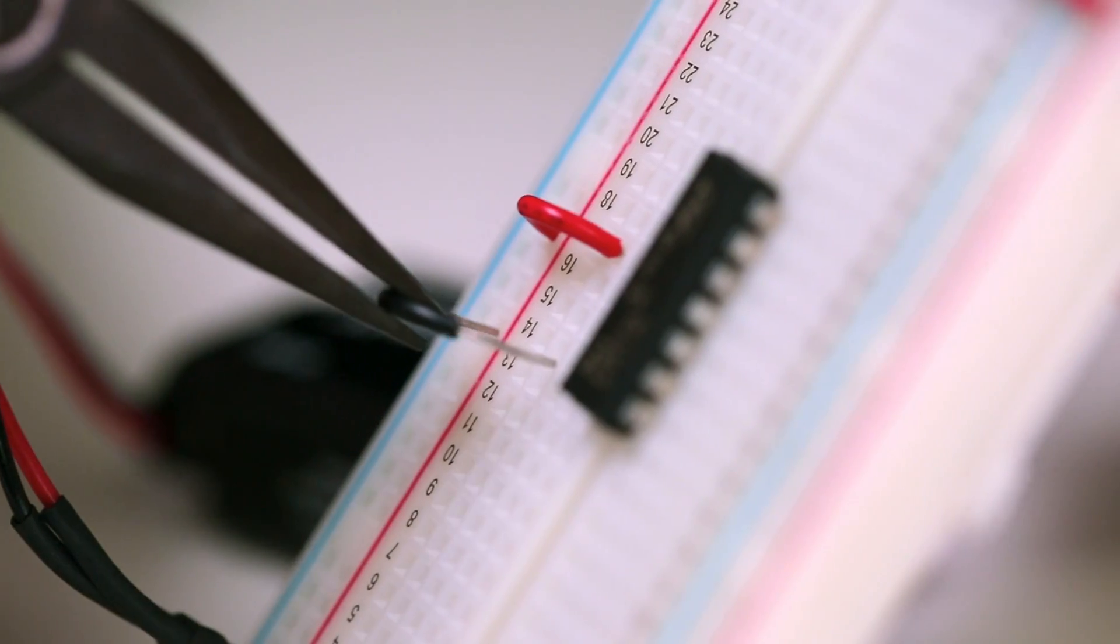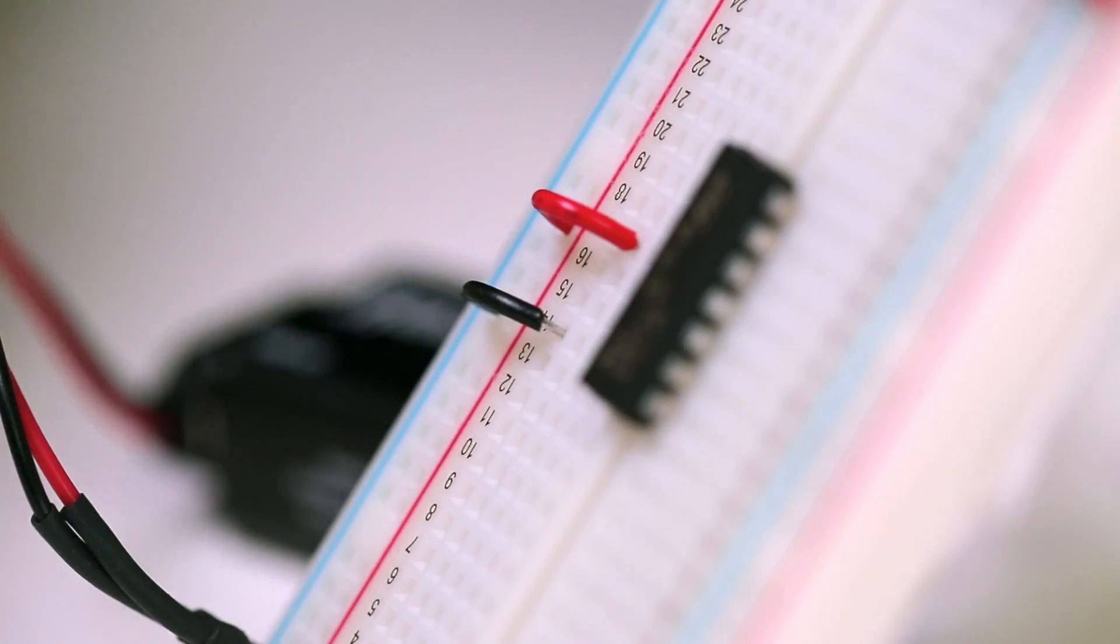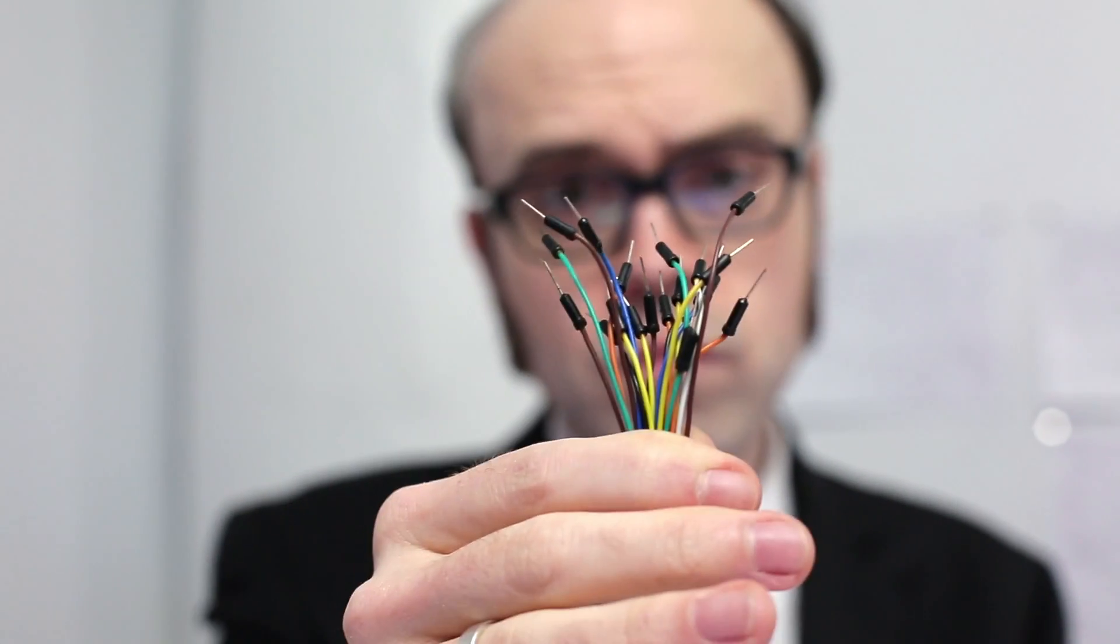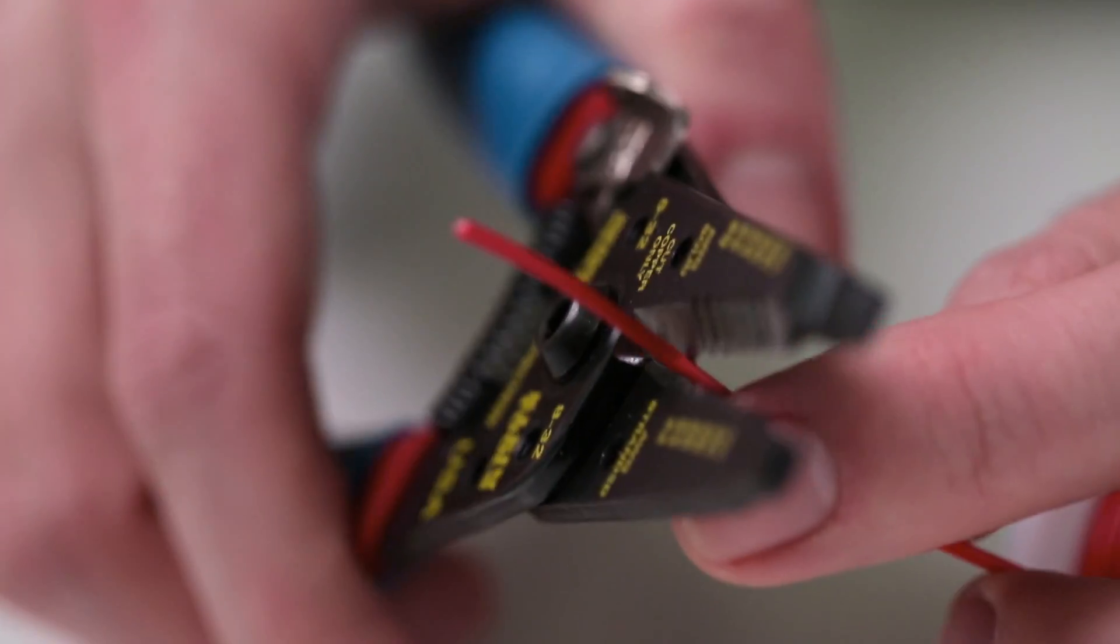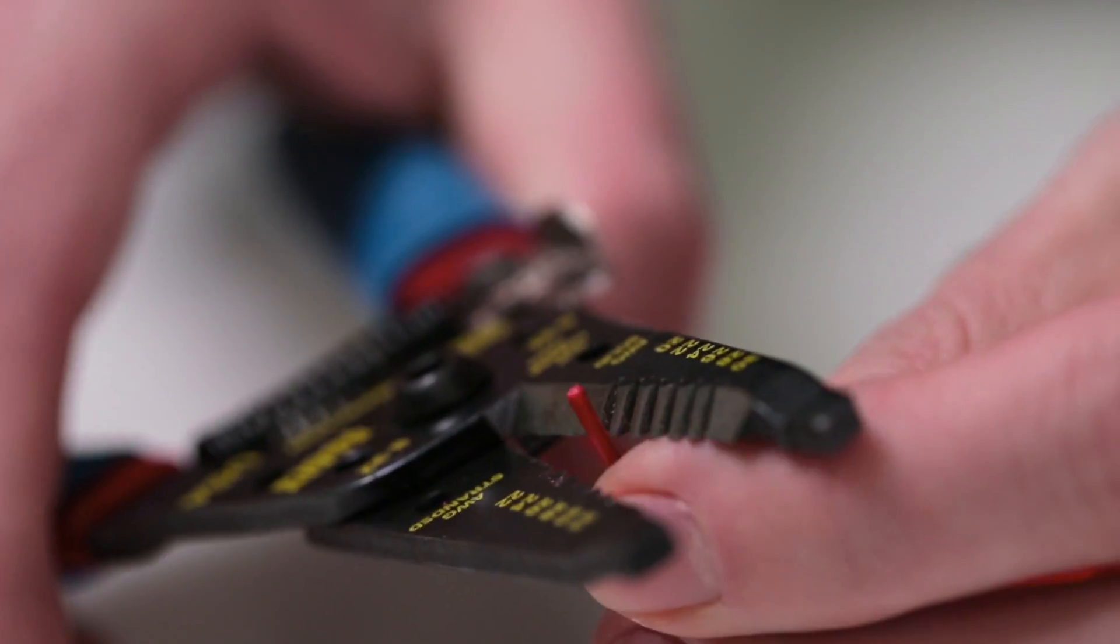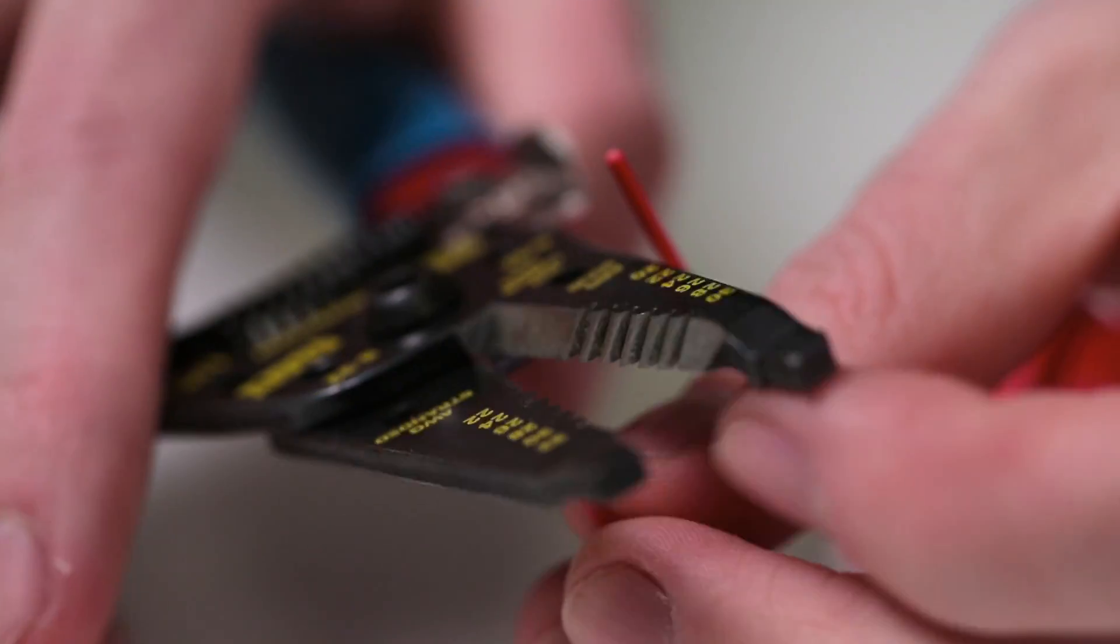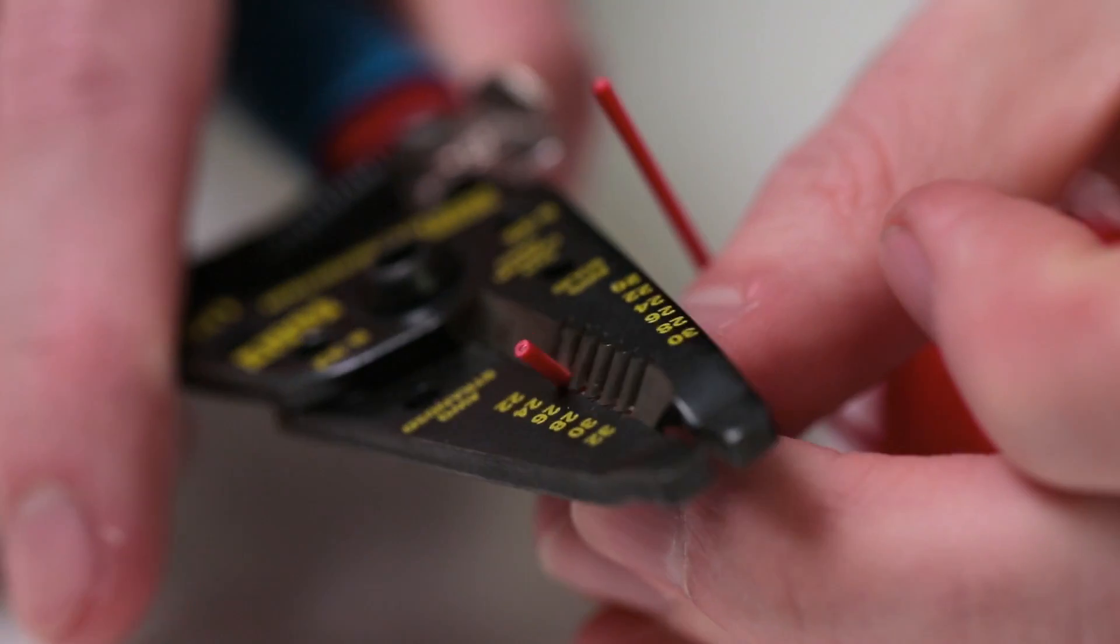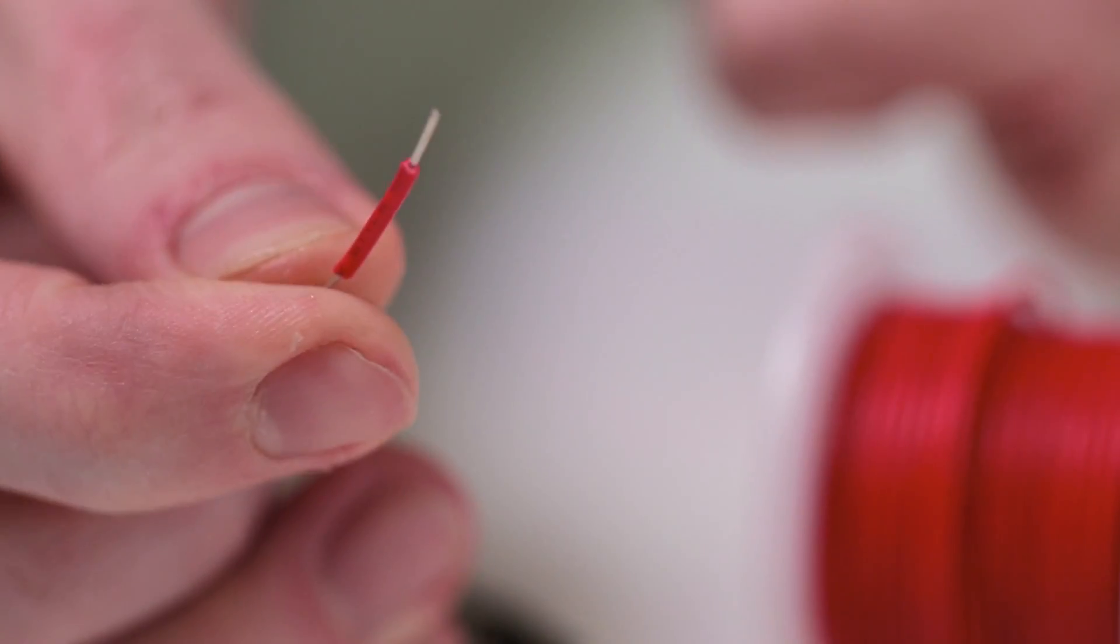In fact, we use jumper wires whenever we need to connect a breadboard's internal conductors. You can buy premade jumper wires like these, but it's easy to make your own using 22 gauge solid core wire. Just estimate the length you'll need, adding a little extra space for the tips which have to enter the board. Clip and strip the wire tips and commence jumping. That's it.